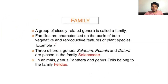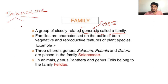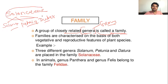Then family. A group of closely related genera is known as family. Here is an example: family Solanaceae, in which three similar genera are present — Solanum, Petunia, and Datura. In animals, genus Panthera and genus Felis belong to the same family. So a group of closely related genera is called a family.